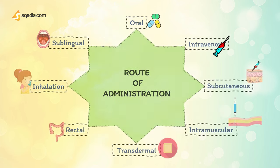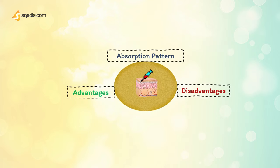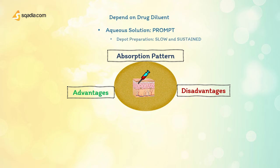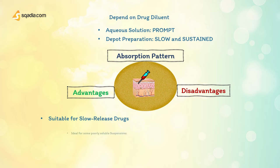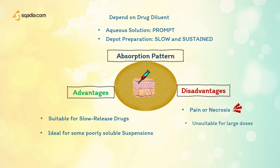Next is subcutaneous administration. Its absorption pattern depends on the drug diluent — aqueous solution gives prompt absorption, while depot preparations are slow and sustained. Advantages include suitability for slow-release drugs and ideal use for some poorly soluble suspensions. Disadvantages are that it can cause pain or necrosis if the drug is irritating, and it is unsuitable for drugs administered in large volumes.